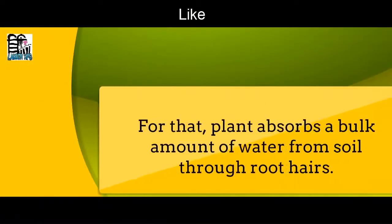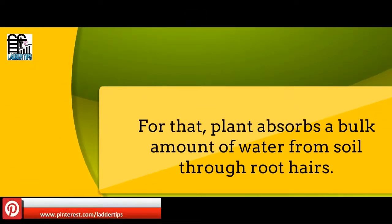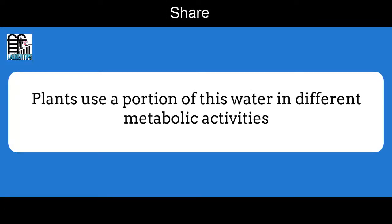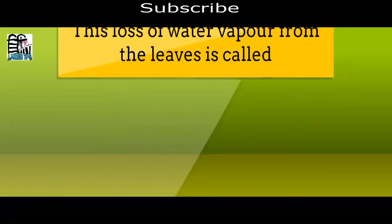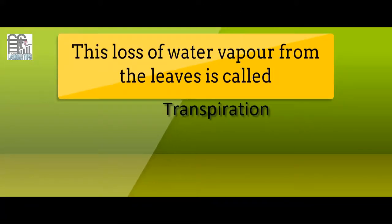For that, plants absorb a bulk amount of water from soil through root hairs. Plants use a portion of this water in different metabolic activities and the rest of it goes out in the form of water vapor to the atmosphere. This loss of water vapor from the leaves is called transpiration.